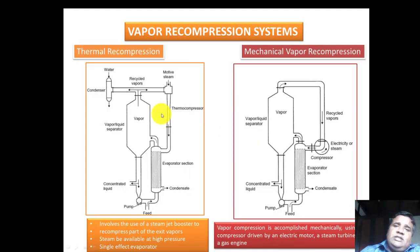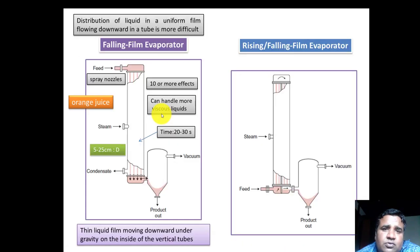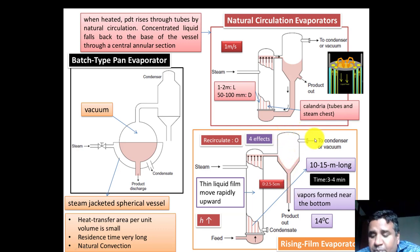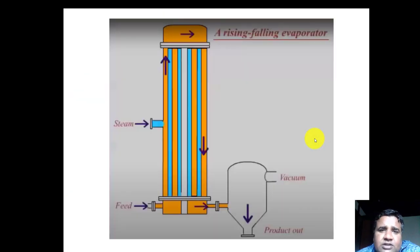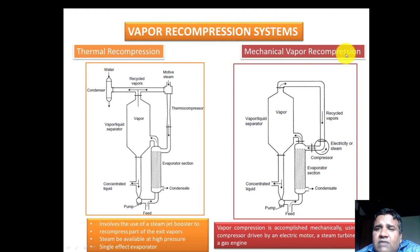Now I am coming to vapor recompression systems. Why is vapor recompression required? We studied multiple effect evaporators. The vapor collected from the separator is not at a high temperature. To increase the temperature of this vapor coming out, we have two provisions: either thermal recompression or mechanical vapor recompression. The vapor generated from the first effect is collected — it is not at high temperature — so we need to recompress it.